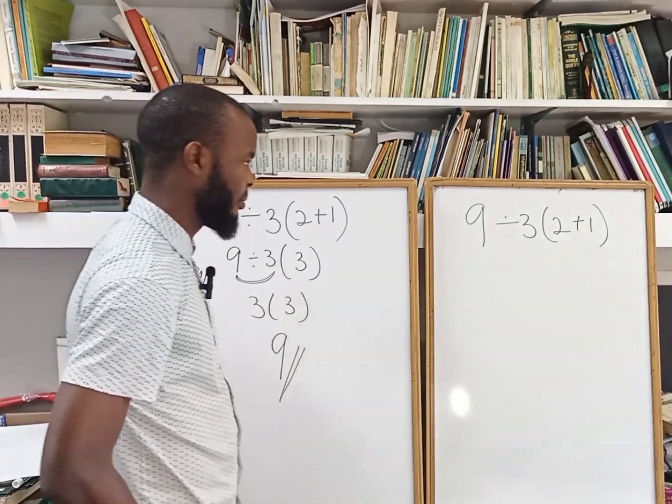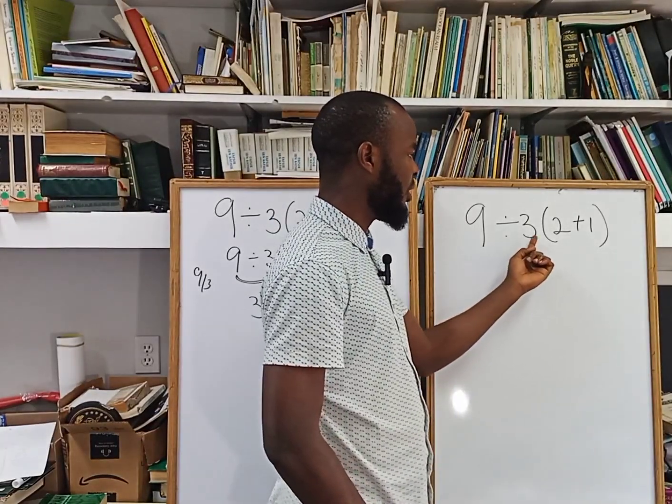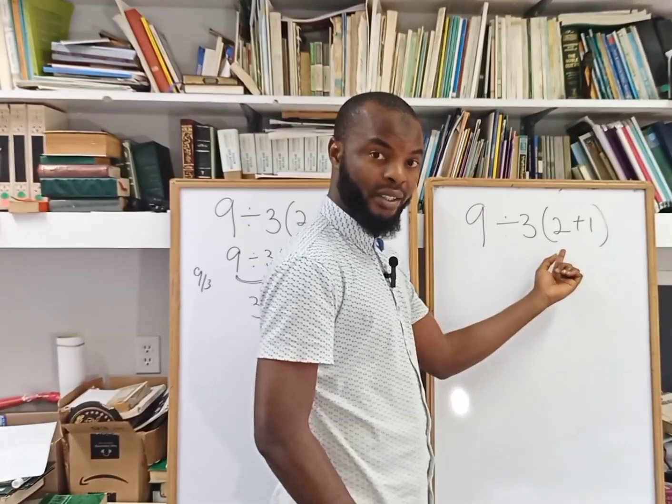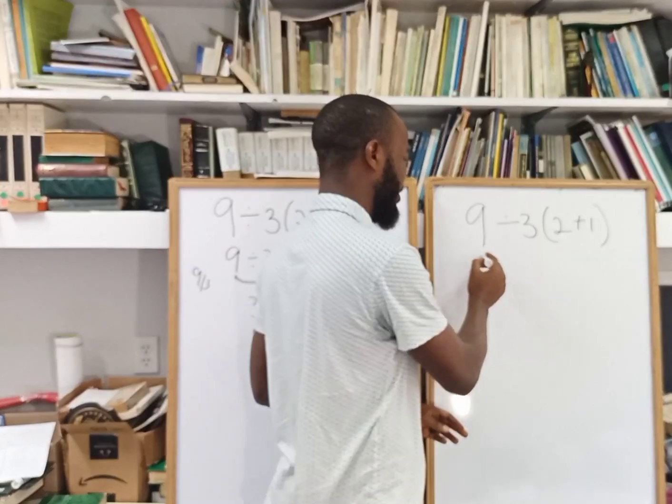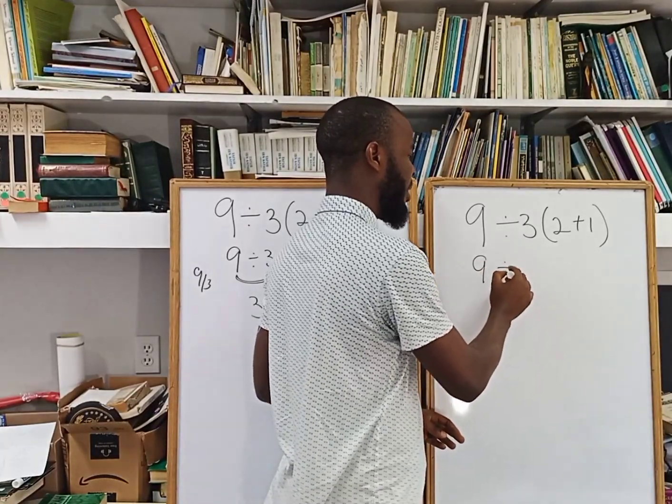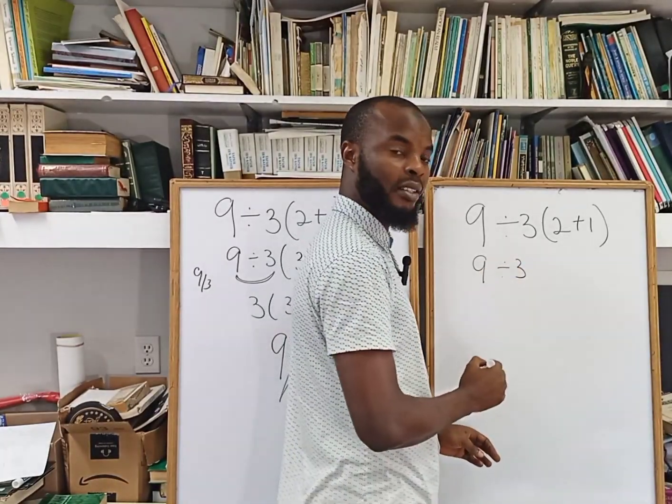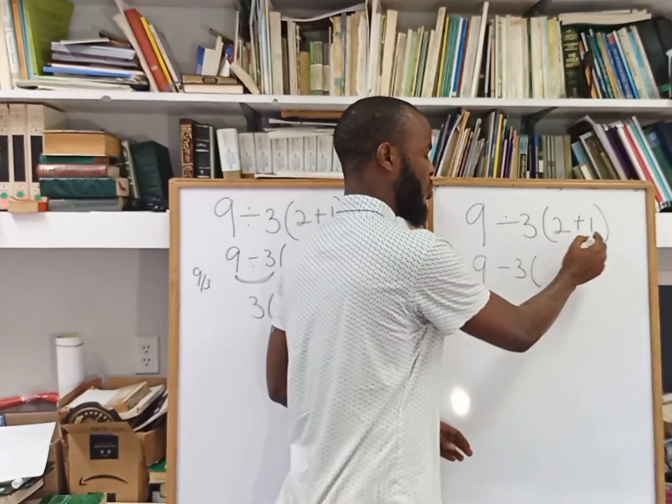Secondly, I'm having 9 divided by 3 into bracket 2 plus 1, the same question. I have 9 divided by 3, solving the parentheses first, 2 plus 1 gives 3.